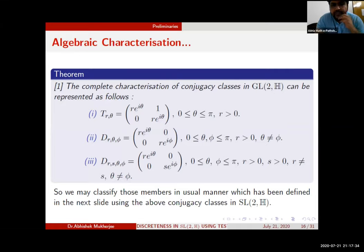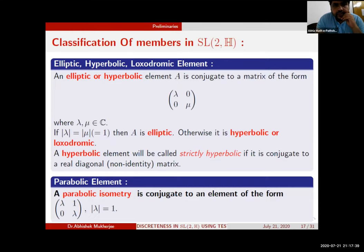An elliptic or hyperbolic element is conjugate to a matrix of the form (λ, 0; 0, μ) where λ, μ are in C. If |λ| = |μ| = 1 then A is elliptic, otherwise it is hyperbolic and loxodromic. A hyperbolic element will be called strictly hyperbolic if it is conjugate to a real diagonal non-identity matrix. A parabolic isometry is conjugate to an element of the form (λ, 1; 0, λ) where |λ| = 1.